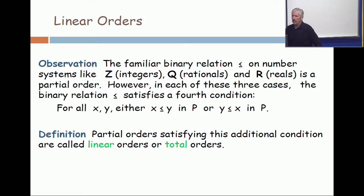It's reflexive, antisymmetric, and transitive. But in each of those three cases, the less-equal relation satisfies an additional property. If you pick any two elements that are distinct, one of them is less than the other.